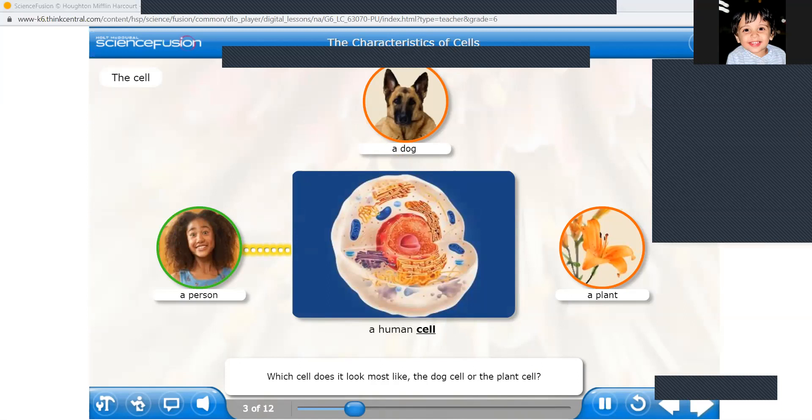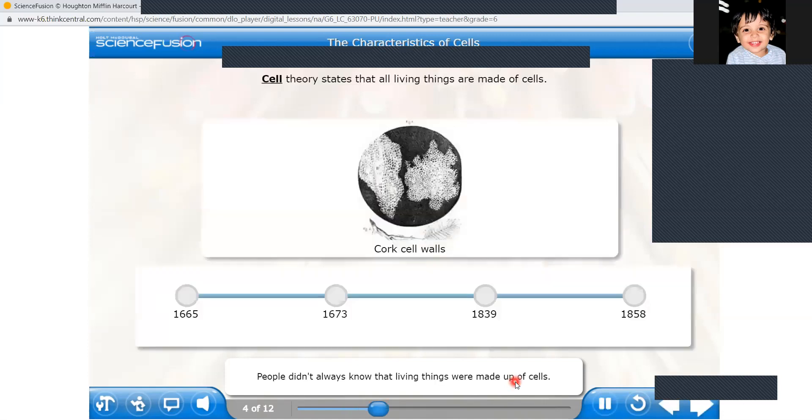People didn't always know that living things were made up of cells. It took scientists centuries to come up with what we now call cell theory. Cell theory tells you about how the cell, who invented the cell, how did they know about it, who was the one who discovered it. It's not invention, I'm sorry, it's discovering. Who's the one who discovered cell? And it's not only one scientist. There were many scientists together exploring about it, and that's the reason it's called a cell theory. Inshallah, in our next class we will learn about who all were involved in that.